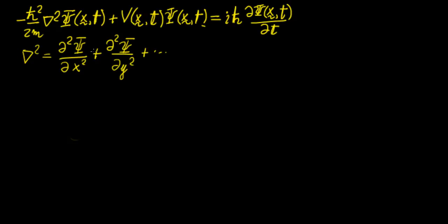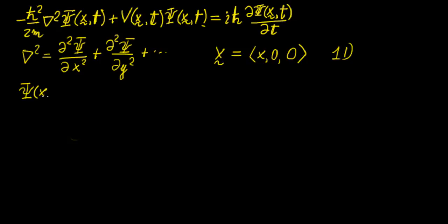First, instead of considering the three-dimensional case, let's consider the one-dimensional equivalent where x is just x and everything else is zero. We're going to take the wave function and, as we have done with other partial differential equations, assume that the solution is separable. So we start by guessing that the solution can be separated into two independent functions: lowercase ψ as a function of x, and another function T as a function of time. The product of those two functions will give us the full solution.